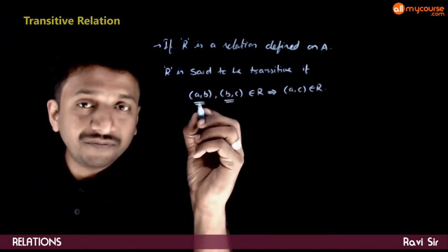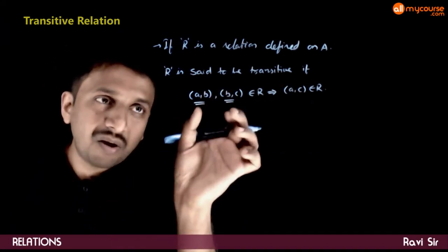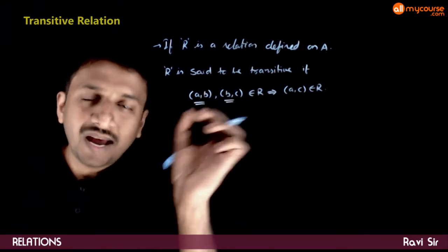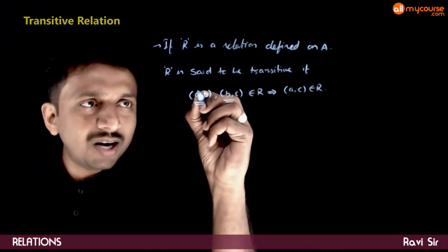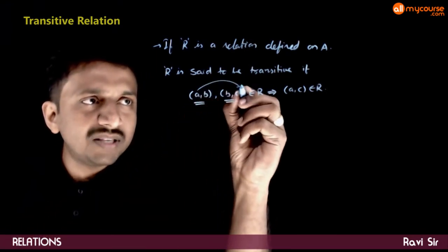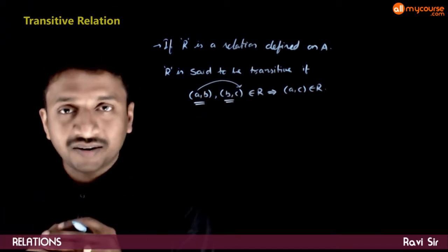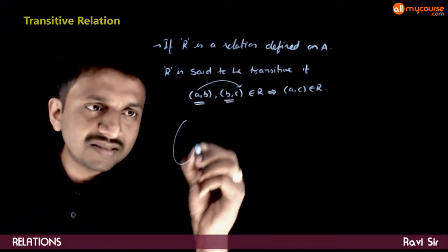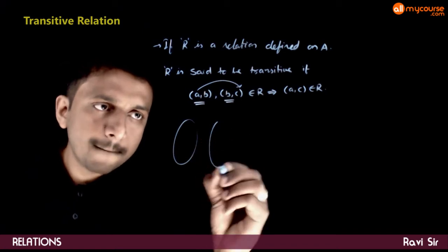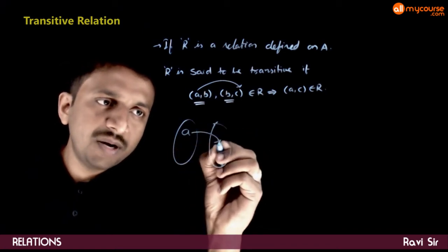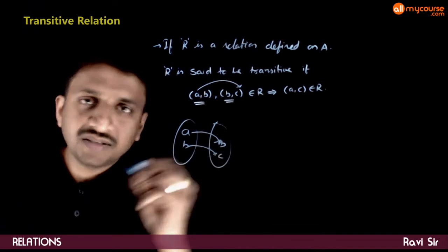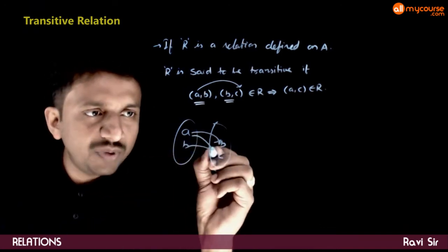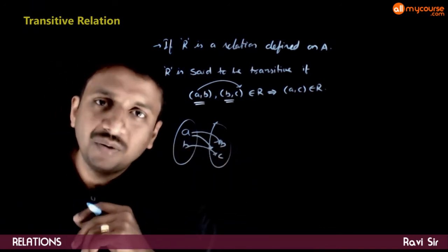That is, if two ordered pairs of the form (A, B) and (B, C) are present in R, the ordered pair (A, C) should always be present in R. In other words, if A is related to an element B, and B is related to an element C, then A has to be related to C.